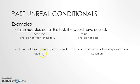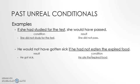In the second example: he would not have gotten sick if he had not eaten the expired food. Again, the past unreal conditional is talking about things that actually did not happen. So 'he would not have gotten sick' means that in reality he did get sick. And 'if he had not eaten the expired food' means that in reality he ate the expired food. So the actual sentences are: he got sick and he ate the expired food.